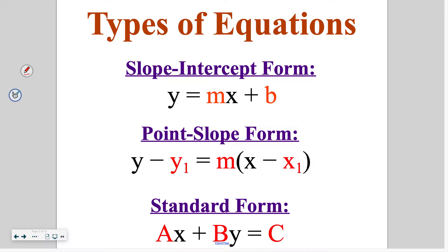our linear equation formats are either slope-intercept form, which is y equals mx plus b, featuring our slope and our y-intercept value; point-slope form, which is y minus y1 is equal to m times (x minus x1); and then standard form, which is ax plus by is equal to c.